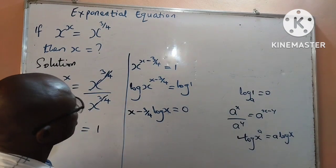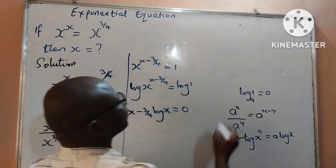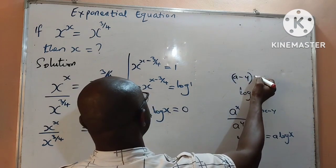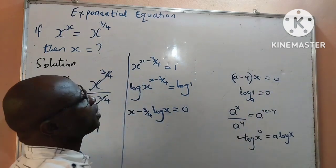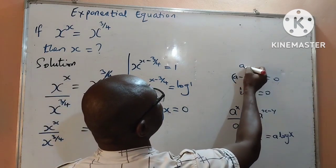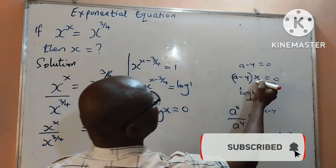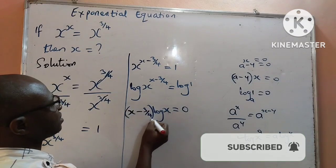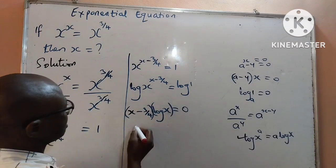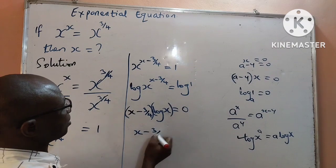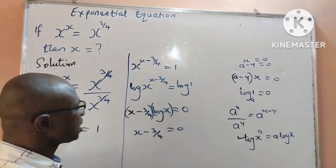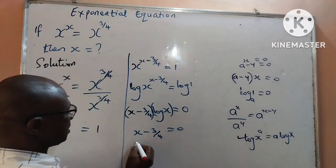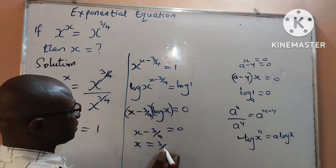At this point, if I have a product equal to 0, such as (a − 1) times x = 0, it means either factor is 0. Therefore, setting x minus 3 over 4 equal to 0 implies that x is equal to 3 over 4.